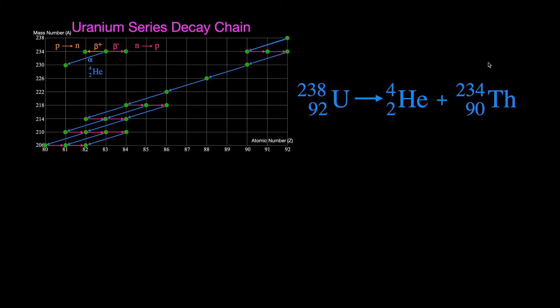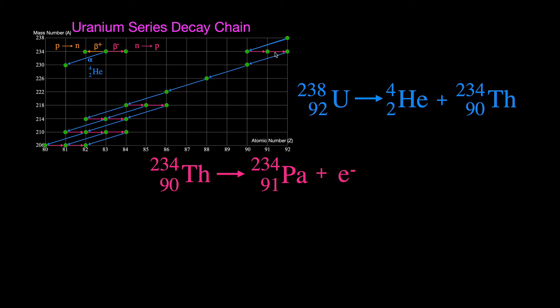Next, thorium-234 undergoes beta-minus decay. The atomic number goes up by one (90 + 1 = 91) and the mass number stays at 234. Element 91 is protactinium, so the daughter is protactinium-234. The other products of beta-minus decay are an electron (the beta particle) and an anti-electron neutrino.